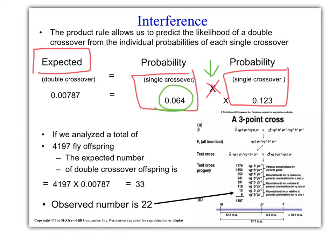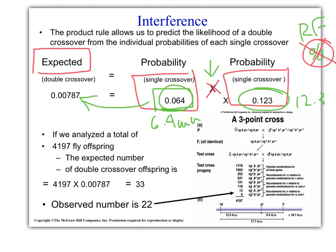We multiply the probability of the single crossover, which you determined in class. If you go back and look at these numbers, this was 6.4 map units and this was 12.3 map units. Recombination frequency in decimals, not in percents this time, is used to calculate the probability of a double crossover, an expected double crossover. The frequency of double crossovers should be the frequency of a single times the frequency of a single.